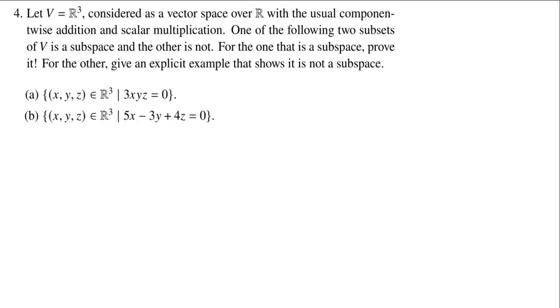Let's see. In fact, the problem is really nice because it tells us that R³ is a vector space with the usual component-wise addition and scalar multiplication. And one of these two subsets that are given is actually going to be a subspace and the other is not. So let's see if we can figure it out.